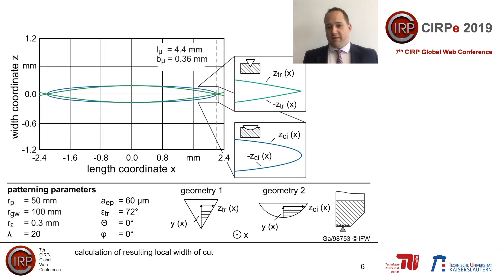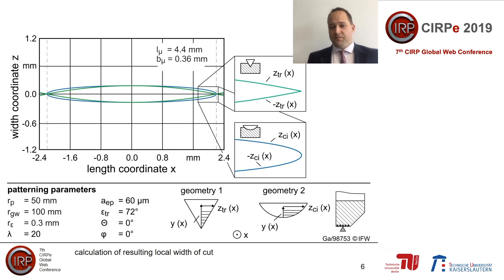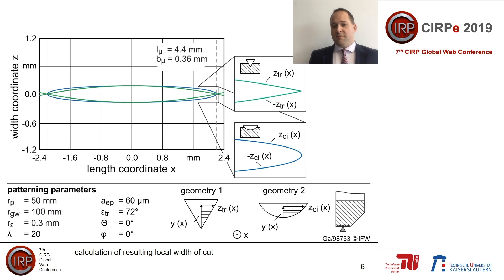The resulting width over length is calculated for two examples shown on this slide. The examples differ in the used shape of the cutting edge. Both shapes are common in patterning of grinding wheels. It can be seen that the triangle-shaped edge leads to a sharp end of the pattern, while the round edge leads to a round end. The shape resulting from the round edge can also be described by an ellipsis.